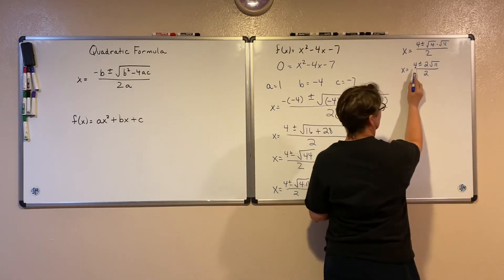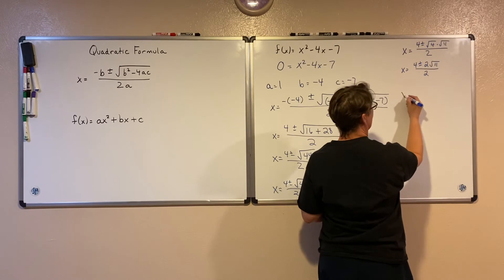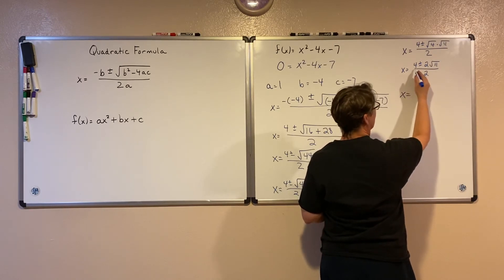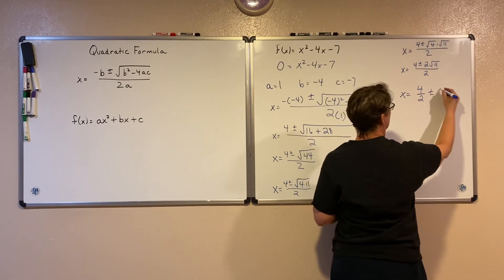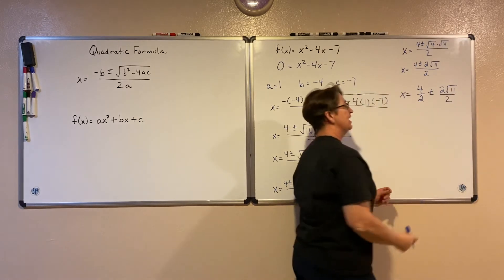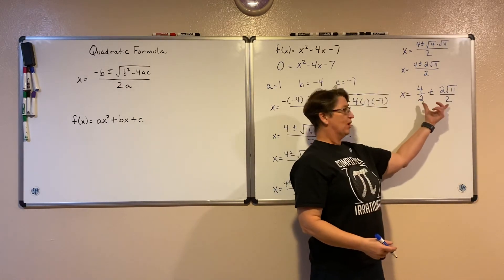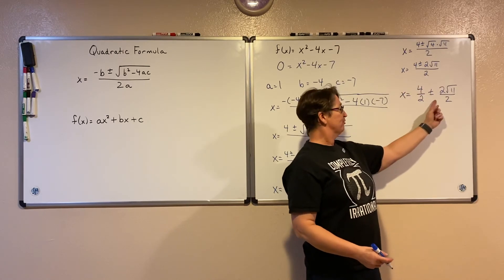Now, notice there's a factor of 2 here, a factor of 2 there, and a factor of 2 here. I can break up this fraction into 4 over 2 plus or minus 2 on the square root of 11 over 2. If I were to add these two, I would keep my denominator and add my numerator. So I would go back from here to there.